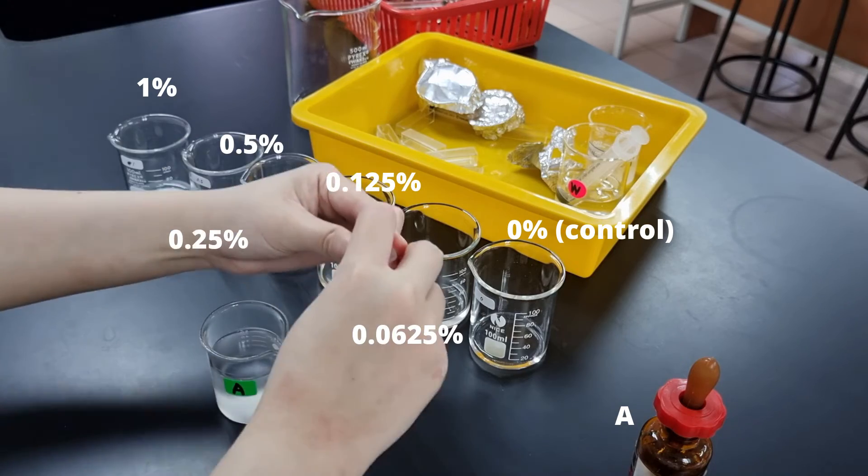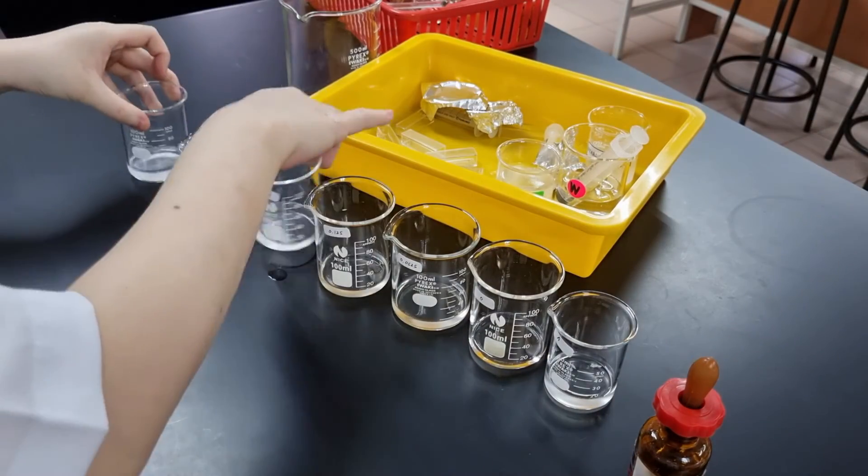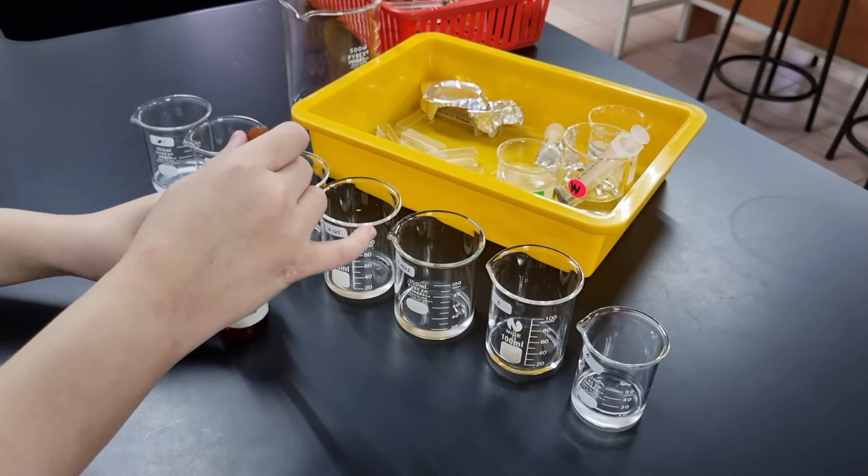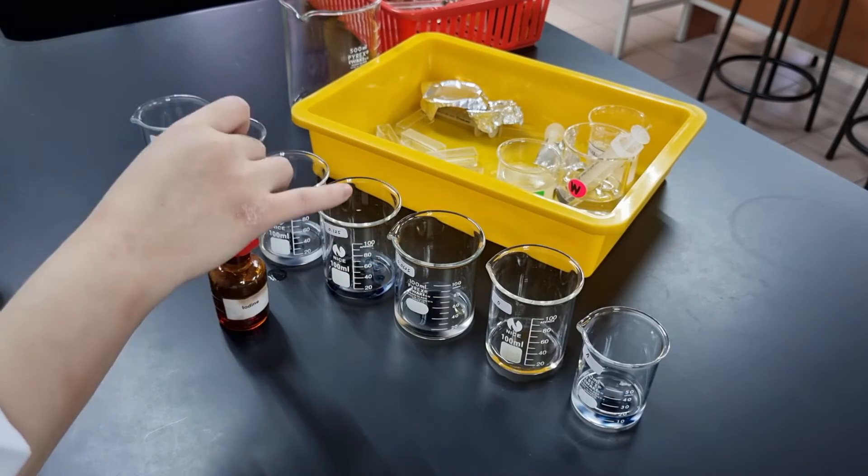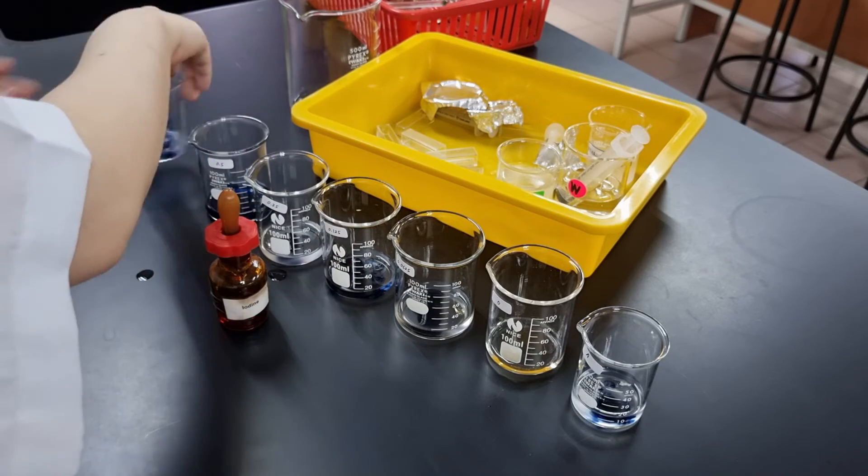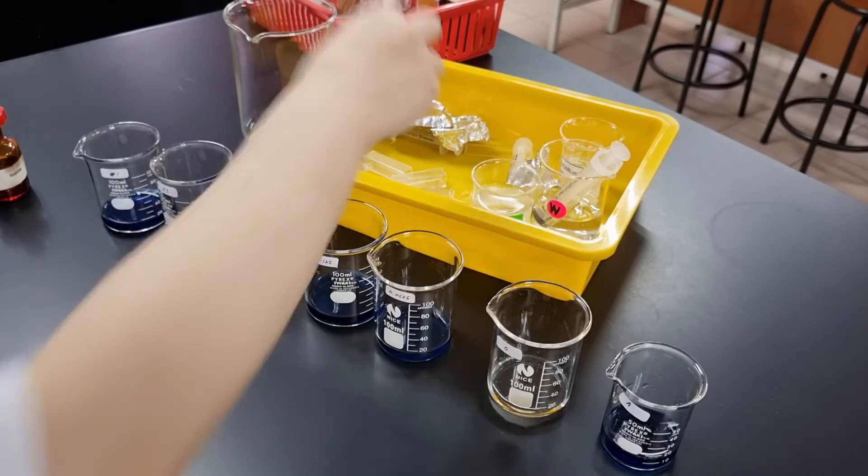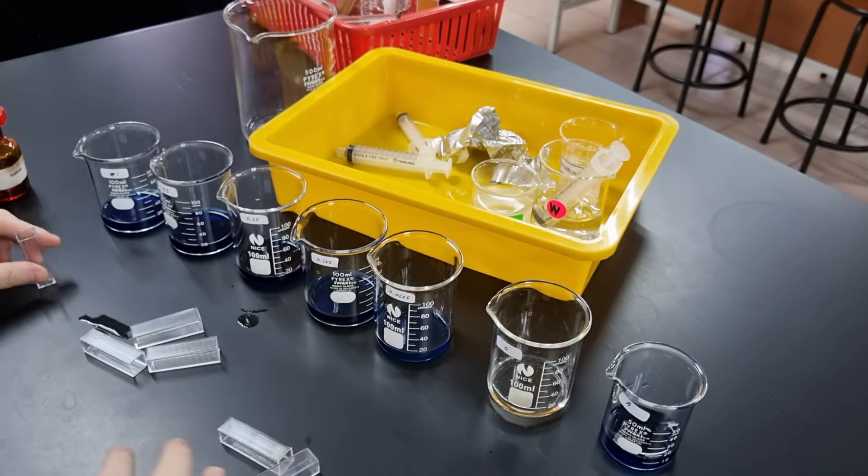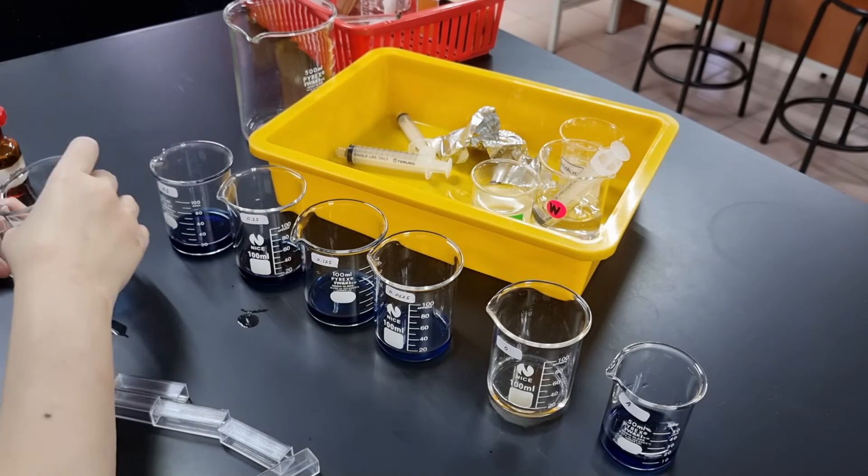Then this is me adding 10 cm³ of solution A into the seventh beaker. Shake it a little bit just in case, and then add one or two drops of iodine solution into the beakers. Making sure that your drop size is about the same, this is why I added a little bit extra at first, because I added too much in the previous beakers. So I'm trying to make sure that iodine solution drop would be about the same amount in each beaker.